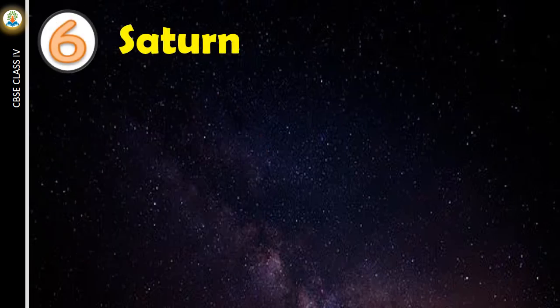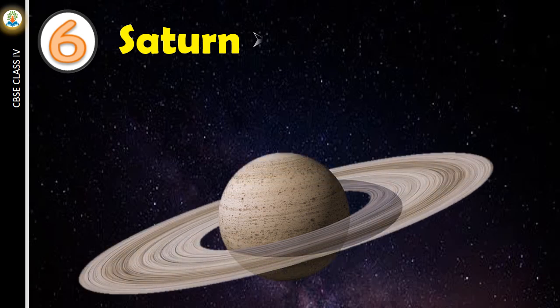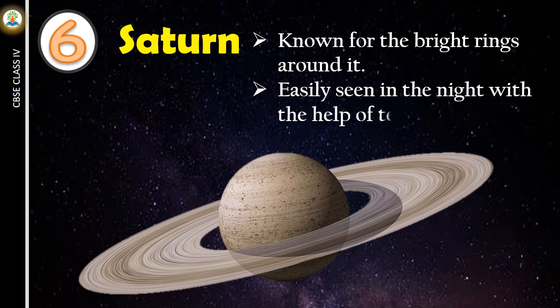Saturn is the sixth planet. It is known for the bright rings around it. Can be easily seen in the night with the help of a telescope.